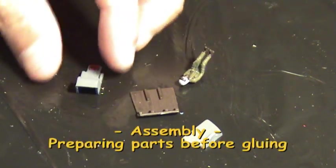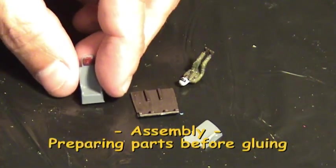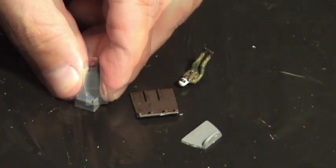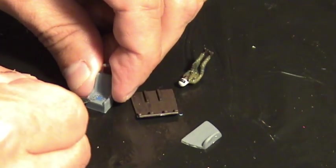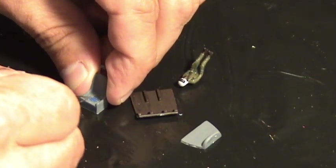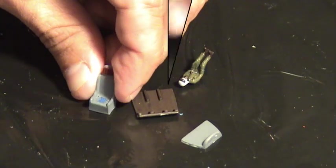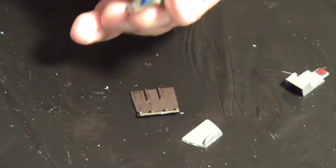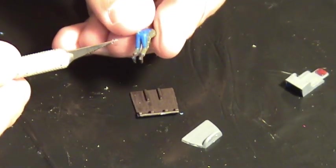Before gluing parts together, make sure you remove the paint from the areas you will apply the glue. Use a hobby knife or sandpaper to remove the paint.